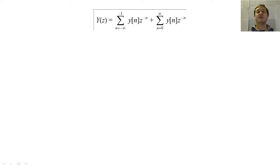In order to understand how this two-sided Z-transform works, let's split our sequence into two parts and perform the Z-transform on the two sides. Let's also suppose that our sequence Y of N takes this form.